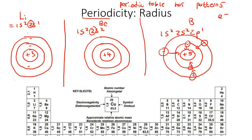So we would expect lithium to be the biggest, then beryllium a little bit smaller, boron smaller than that, carbon smaller, nitrogen smaller, oxygen smaller, and fluorine the smallest. We don't really include noble gases in these types of periodicity discussions — they don't really react.